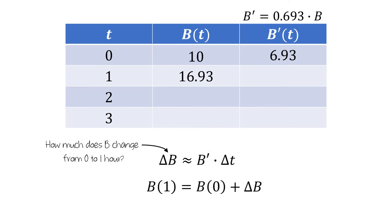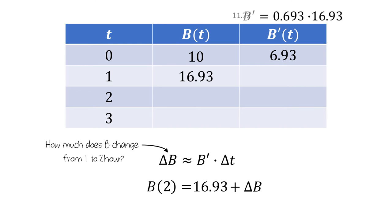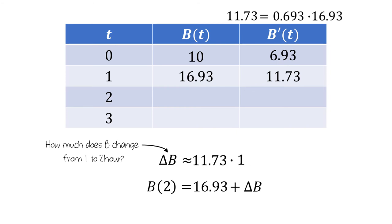And we can repeat this process. If we wanted to compute the number of bacteria at t equals two hours, we'd need to know the number of bacteria present at one hour, which is 16.93, and how much b changes from t equals one to two hours. To compute this, we'll need to compute the rate at which b changes. We can use the value of b, 16.93, in the differential equation to find that the number of bacteria is changing at a rate of 11.73 bacteria per hour at hour one. From hour one to hour two, the amount of change in time is one hour, so this lets us compute the approximation that the number of bacteria increased by 11.73 bacteria between hours one and two. Incorporating this, we add this change to the 16.93 that were already present, to get a total of 28.66 bacteria present at t equals two hours.